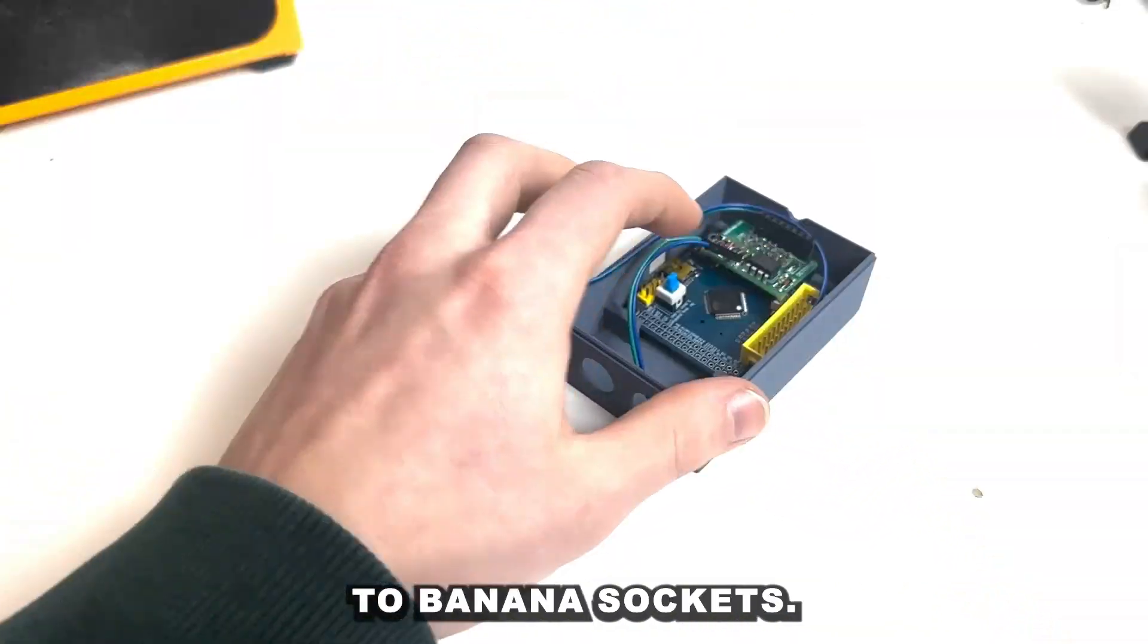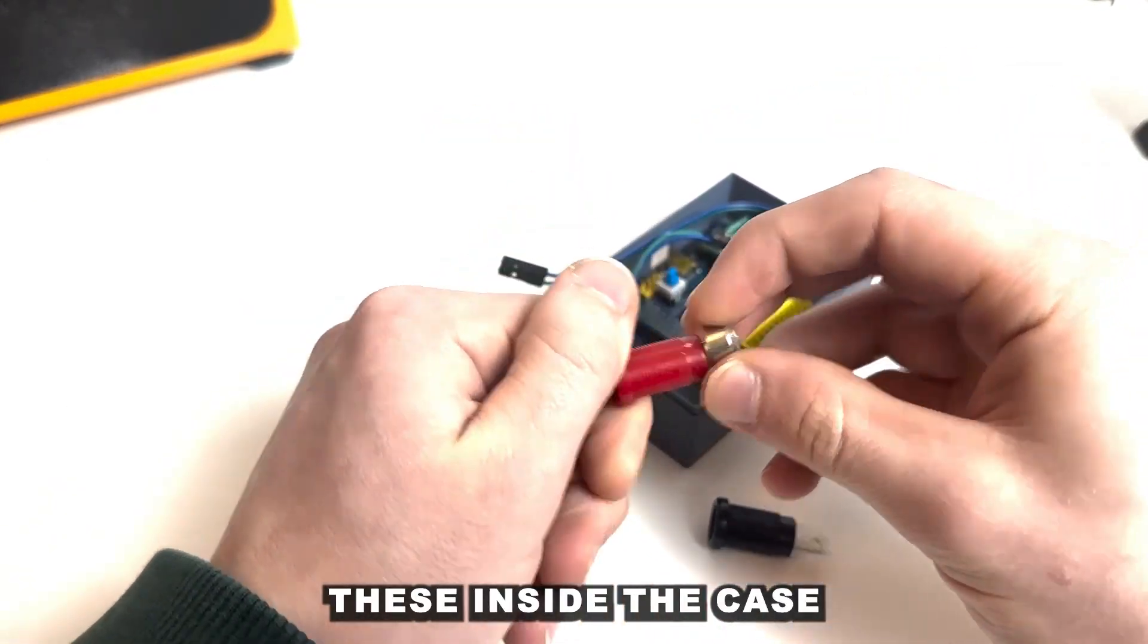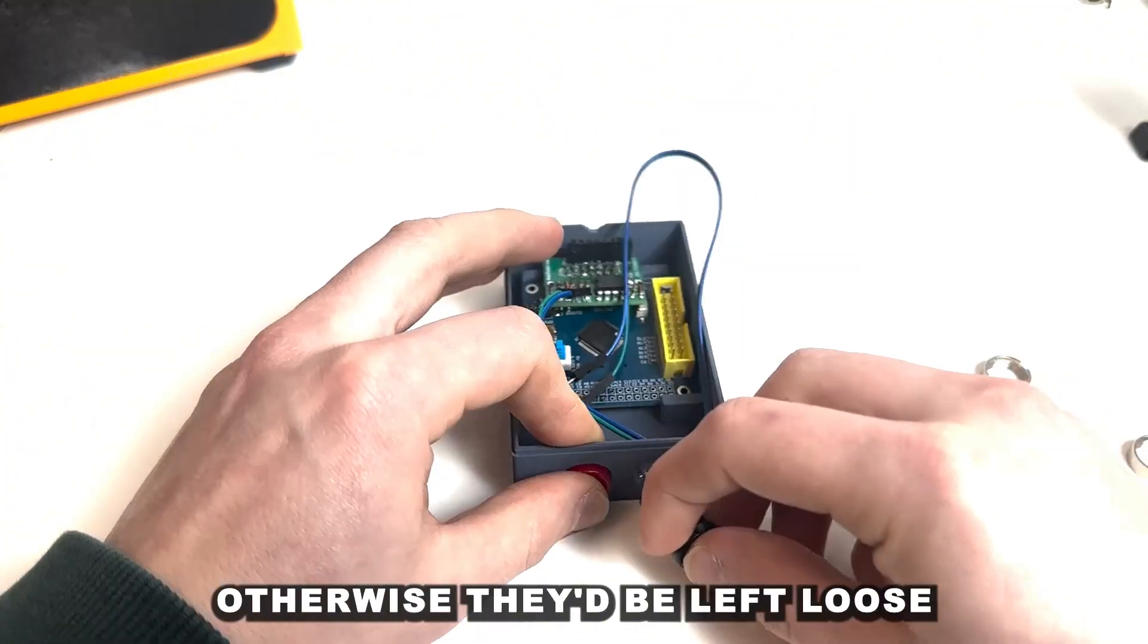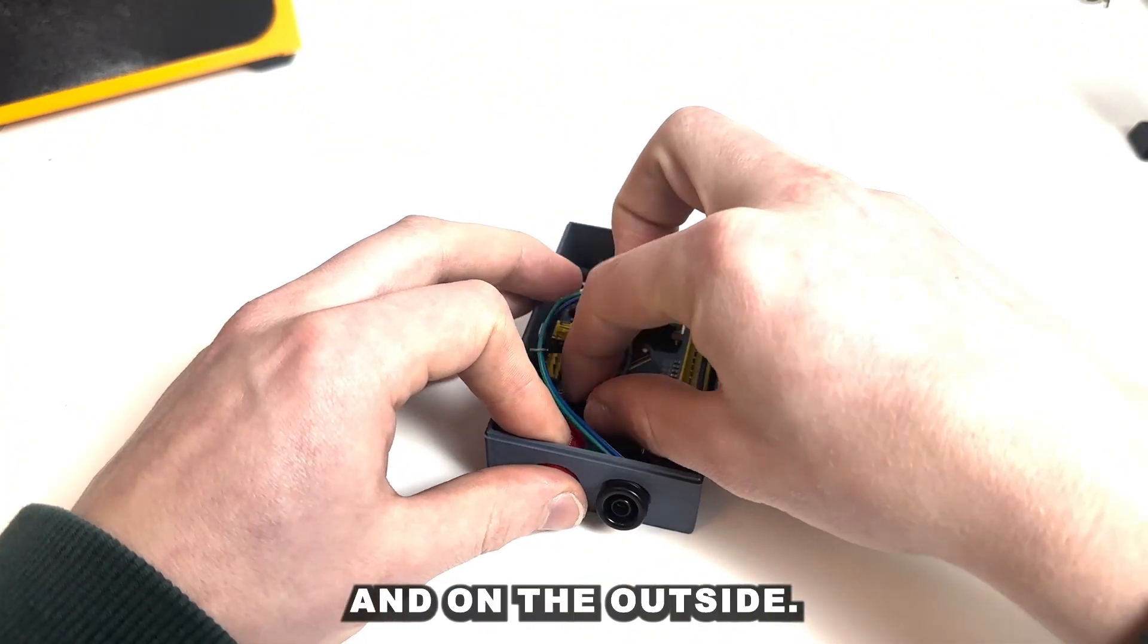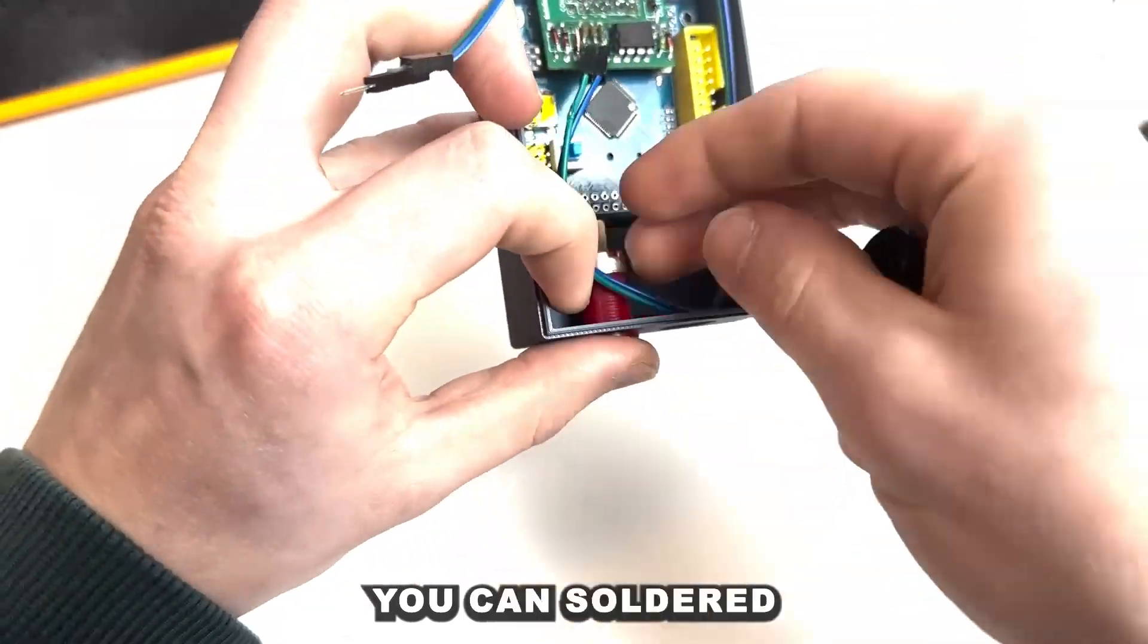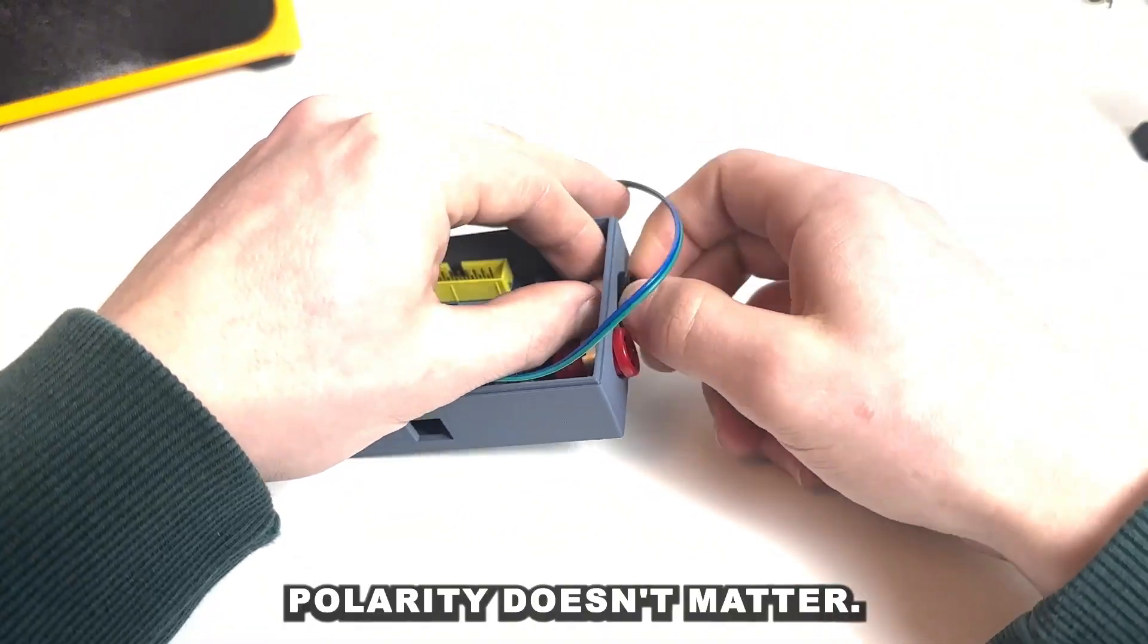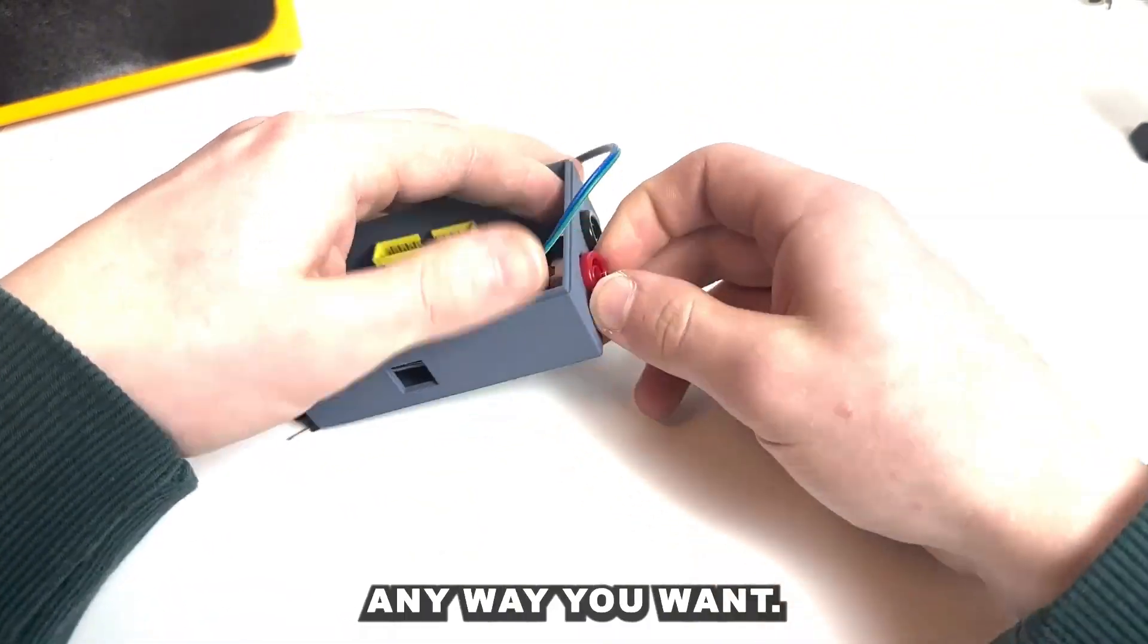Then take your two banana sockets and make sure to place these inside the case before you do any soldering, otherwise they'll be left loose and on the outside. I've done that before, trust me, you don't want to be there. You can solder the two wires in and the polarity doesn't matter. You can solder it any way you want.